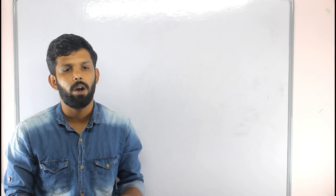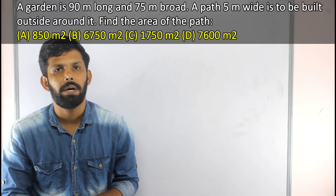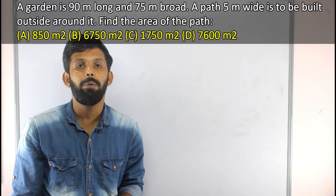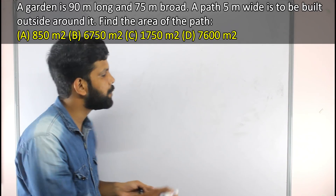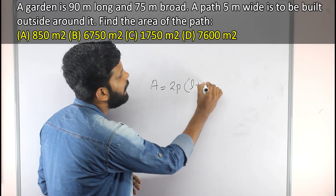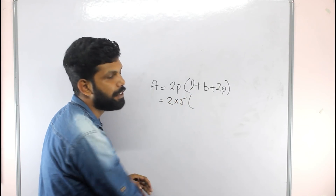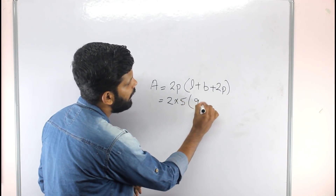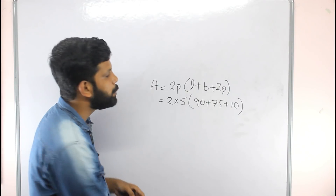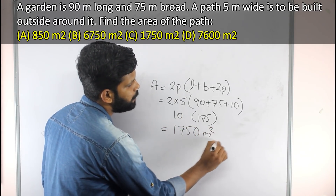A garden is 90 meters long and 75 meters broad. A path 5 meters wide is to be built outside around it. Find the area of the path. The formula is: (2P + L) × (2P + B) minus L × B, where P is the path width. Substituting: 2 into 5 gives 10. Length becomes 90 + 10 = 100, breadth becomes 75 + 10 = 85. Area of path is 1850 square meters.